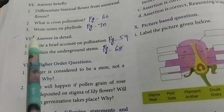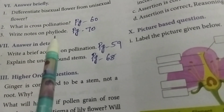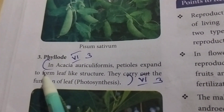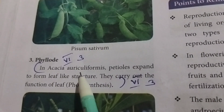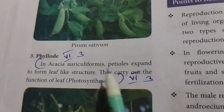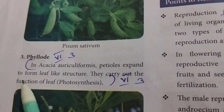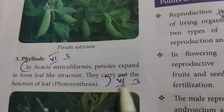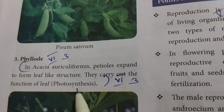Third question: Write a note on phylloclade. Referring to page number 70. In Acacia auriculiformis, the petioles expand to form leaf-like structures. They carry out the function of leaves, which is photosynthesis.